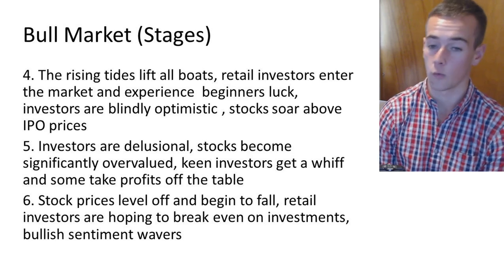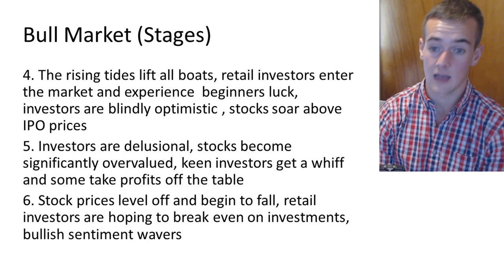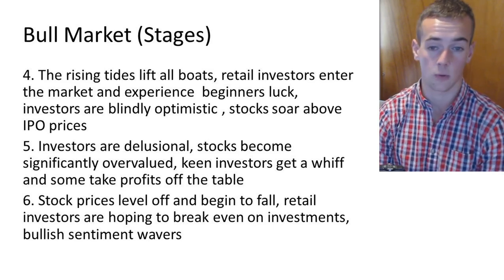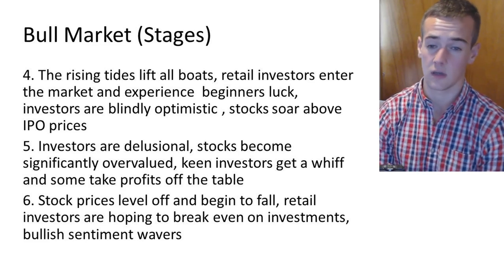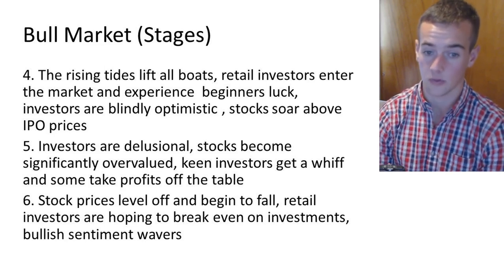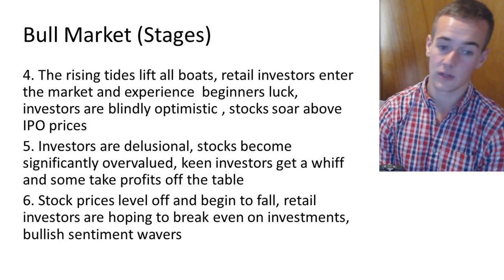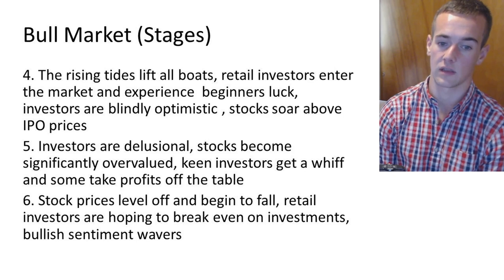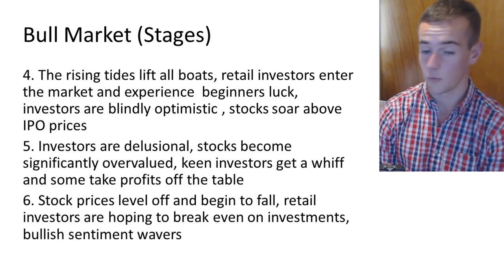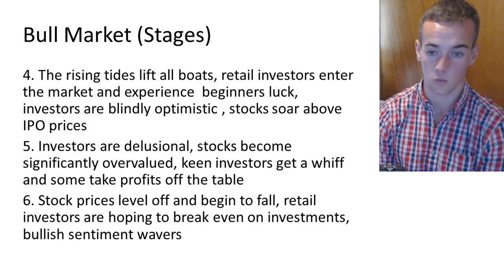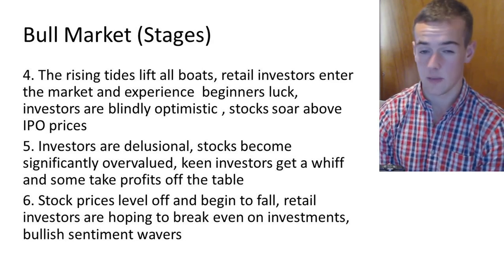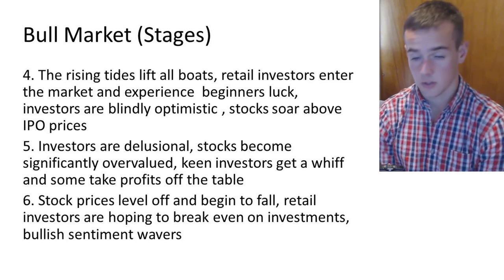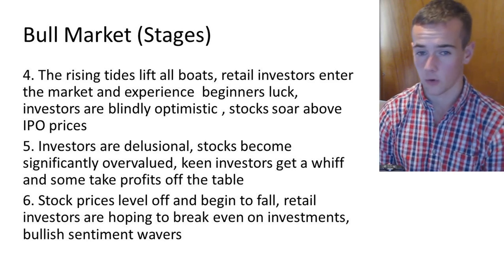The fifth stage of a bull market is when investors are outright delusional — stocks become significantly overvalued and keen investors get a whiff and take profits off the table. Larger institutional investors start to get skeptical, seeing beginners make unrealistic returns, and begin to take money off the table. This triggers the sixth stage, when stock prices level off and begin to fall. Retail investors are hoping to break even on investments and the bullish sentiment wavers. You're seeing people who are generally uncertain, and the overall market sentiment moves from bullish to a skeptical stage — that's when the bull market will eventually give way to a bear market.